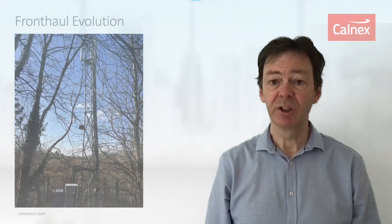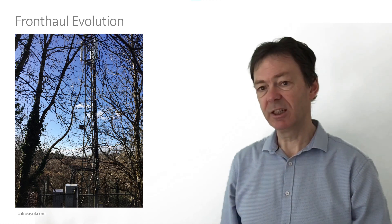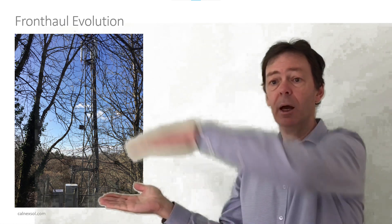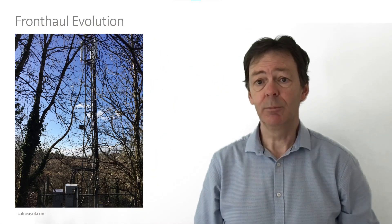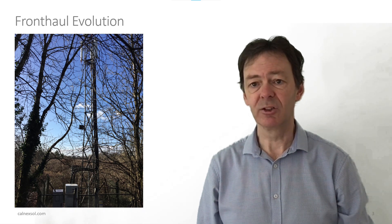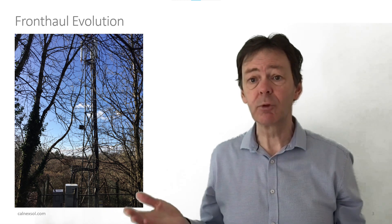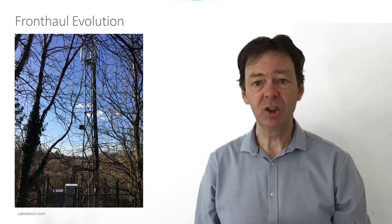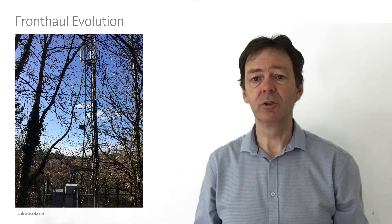Today I'm going to talk to you about synchronisation in fronthaul networks. Fronthaul networks started out as a means to avoid the power losses involved in transmitting the signal from the base station up to the antenna at the top of the cell tower. If you use a coaxial cable for the RF signal, there are several dBs of power losses involved in going up that cable to the antenna. So the idea was to replace that with a digital interface carried over a fibre — and this was the first fronthaul.